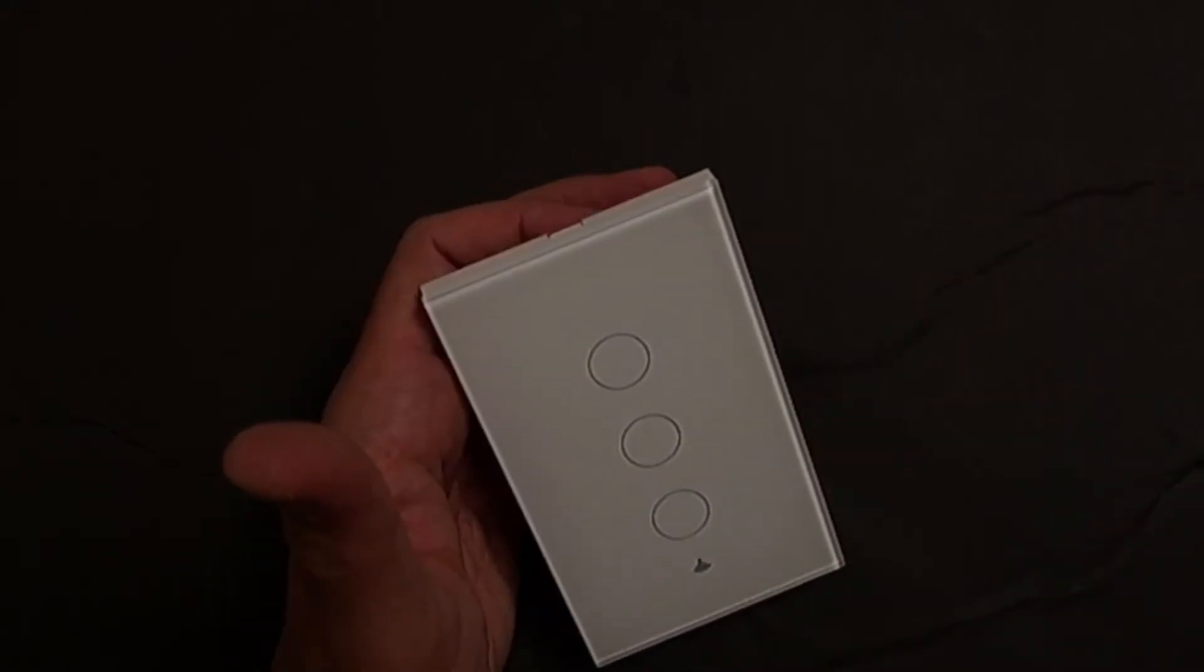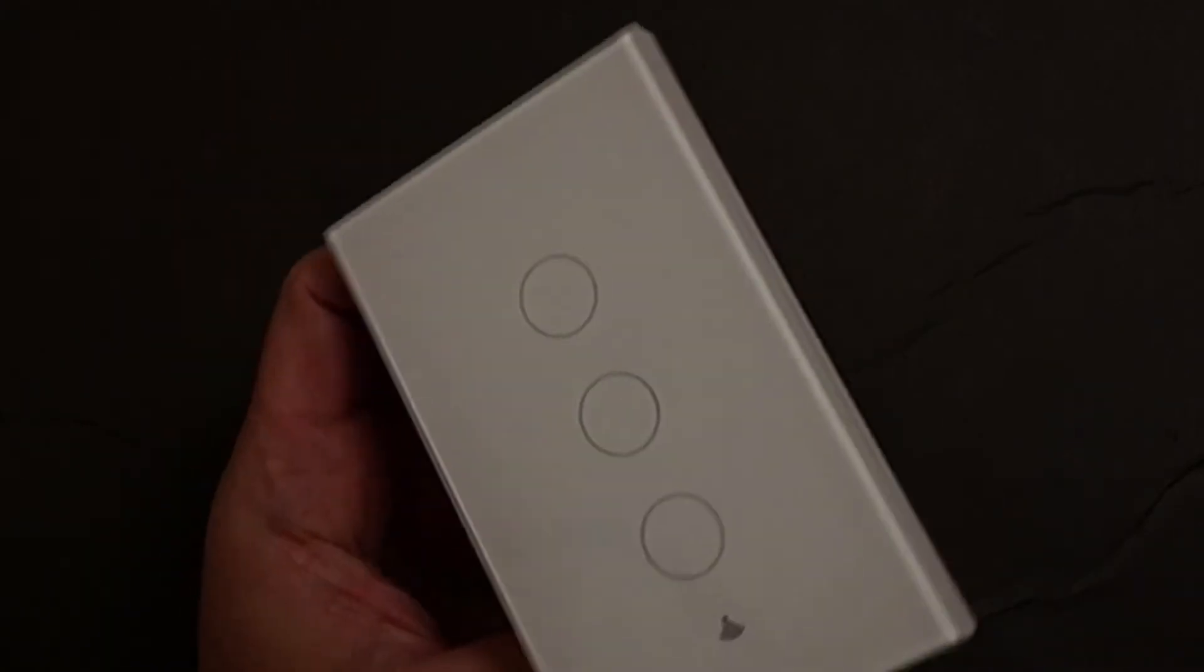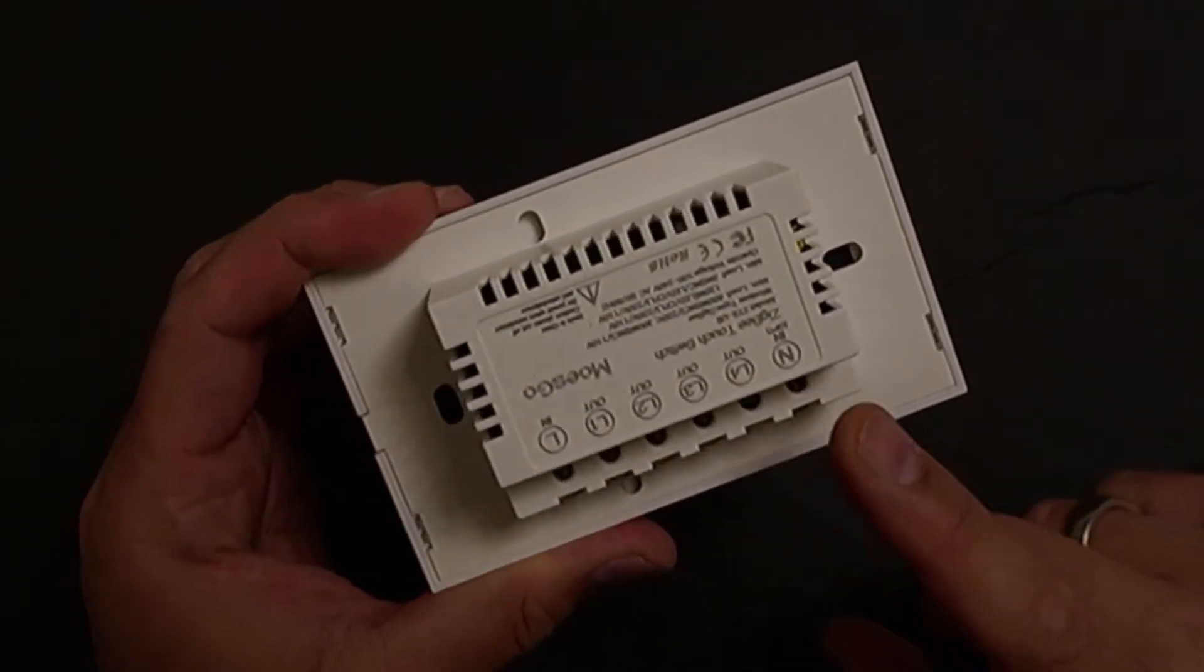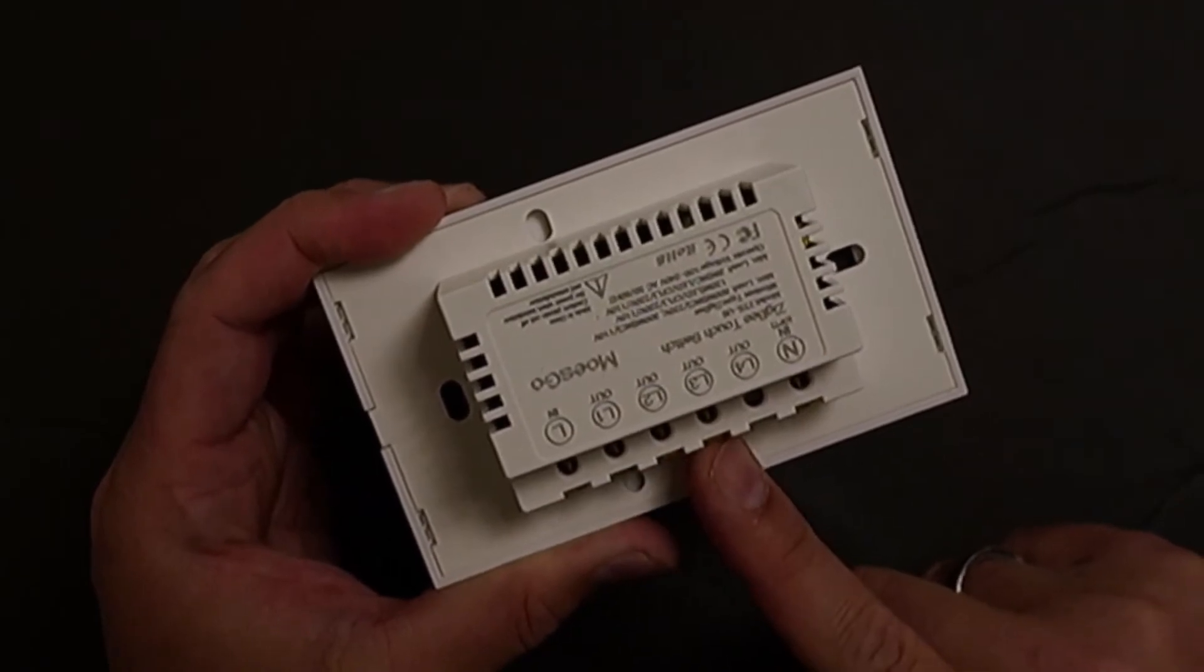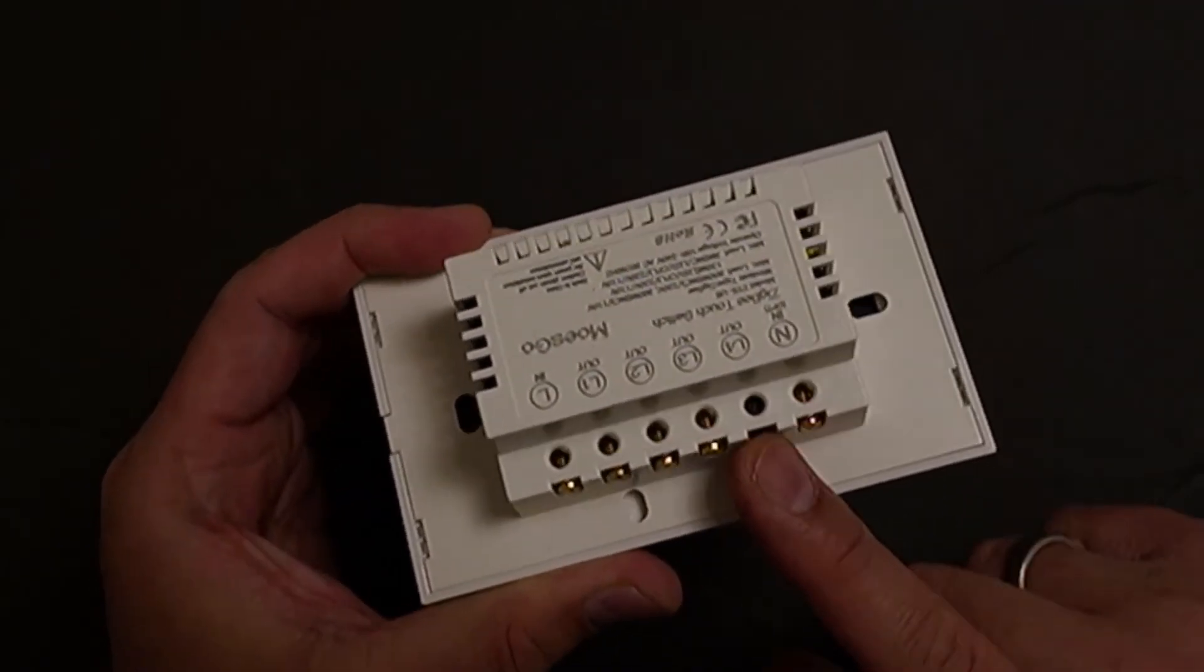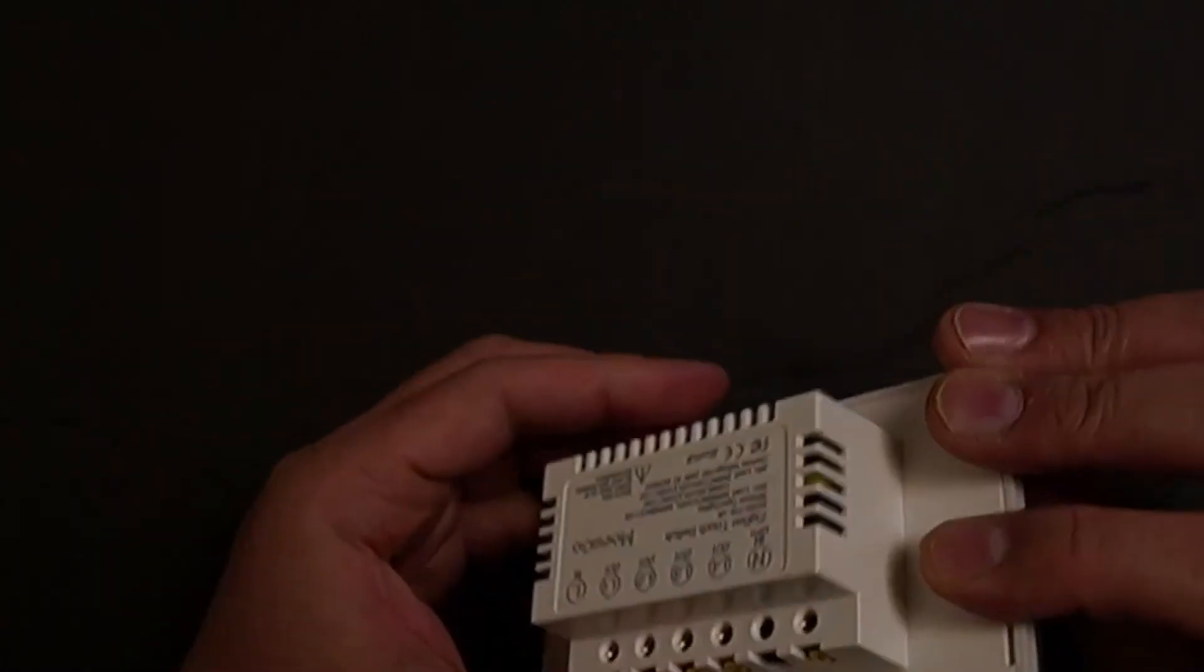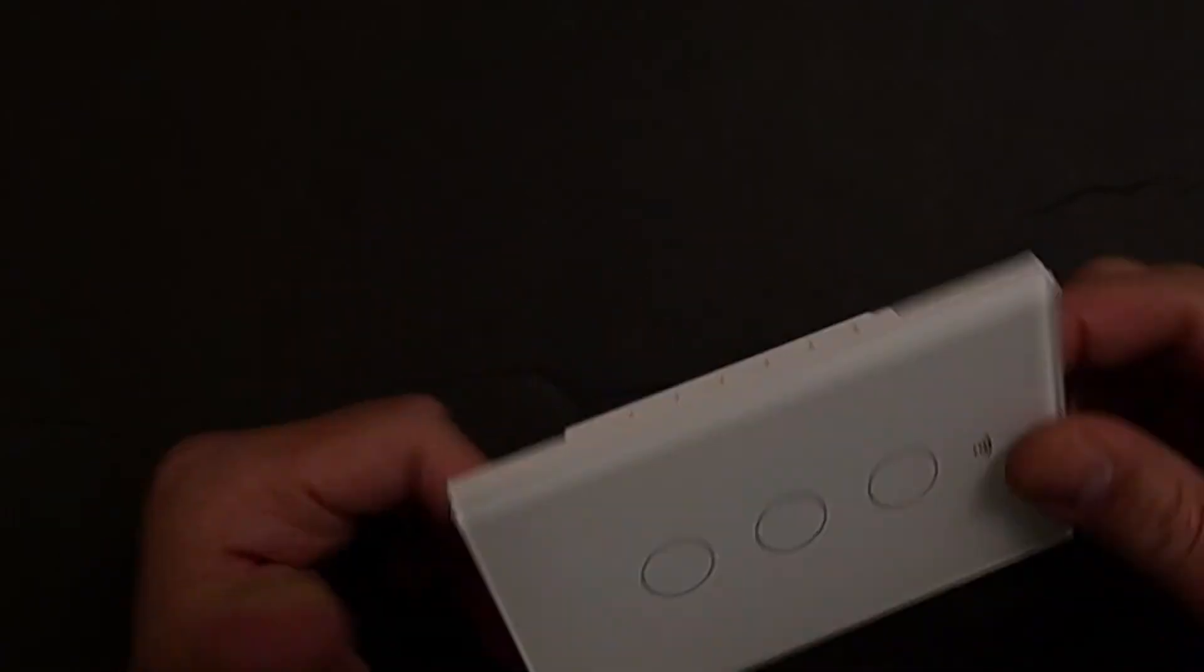One thing unique about this switch is it works without neutral wire. As you can see, here you have power in, and then you have three switches out. The fourth one is not there. There is a model for the switch which comes with four, and then finally the neutral. Here neutral is not there.